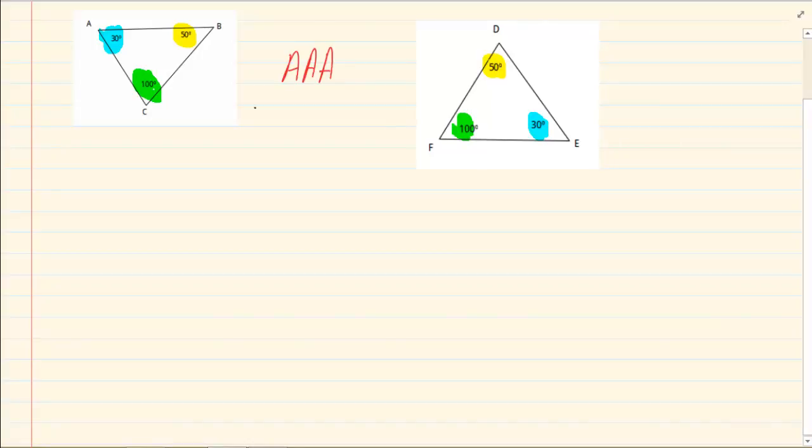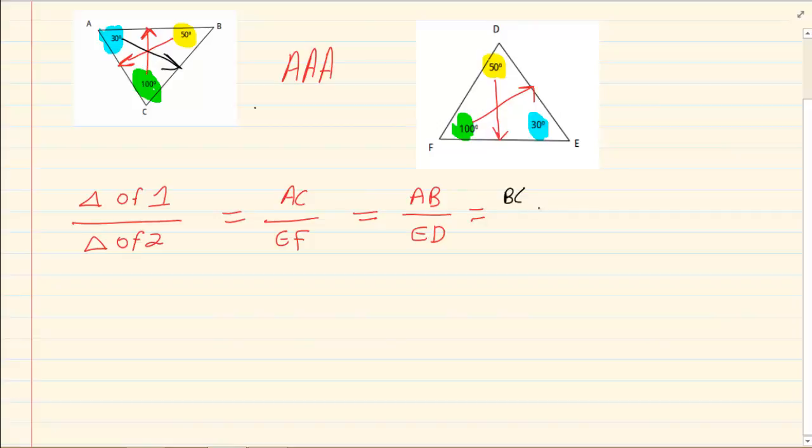But what is important is that this rule becomes a ratio. When you are working with the ratio, you are going to work with the triangle of one over the triangle of the second. If I take the 50 degrees, I am working with AC over EF, and that would equal to AB over ED. And the last one, the 30 is linked to BC and DF. So from similar, what we deduce is that we have a ratio which becomes very relevant later.